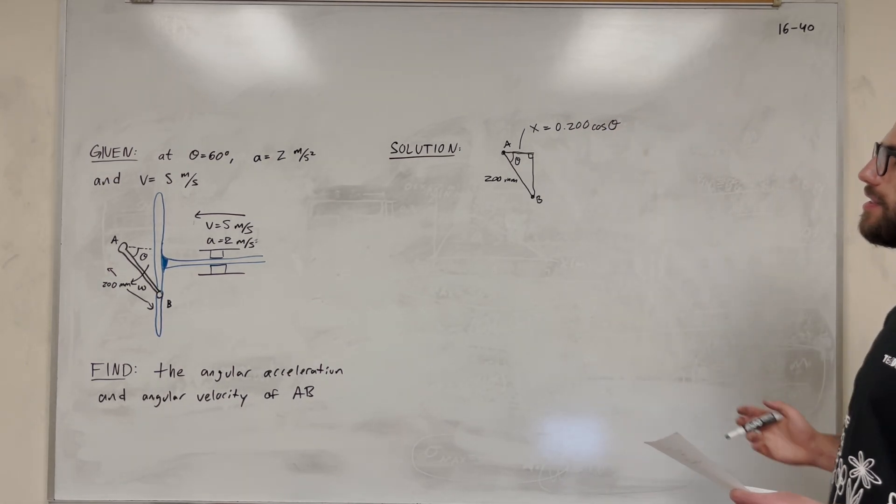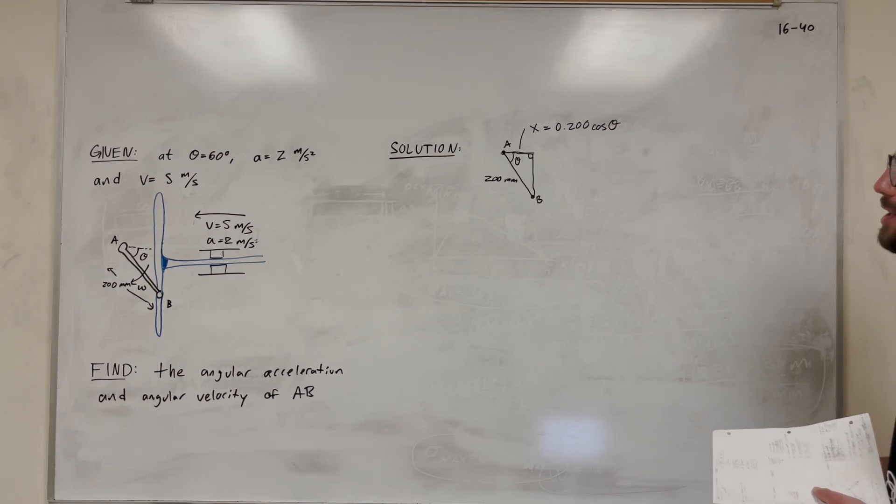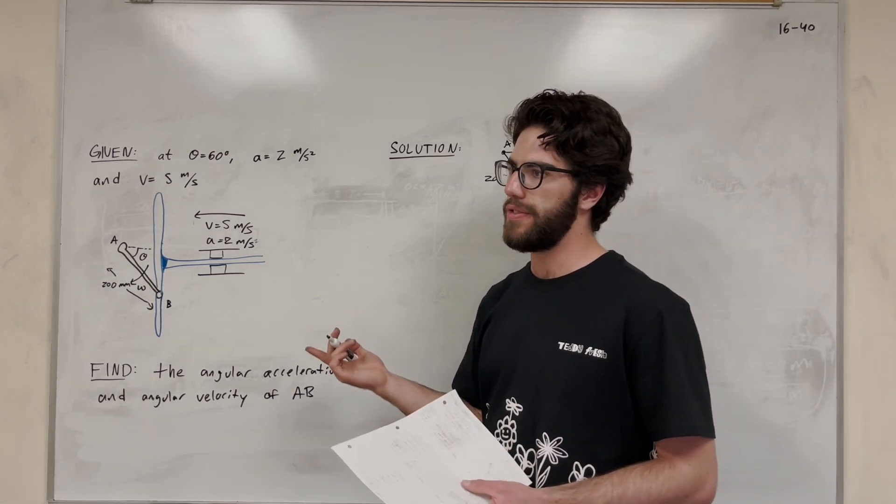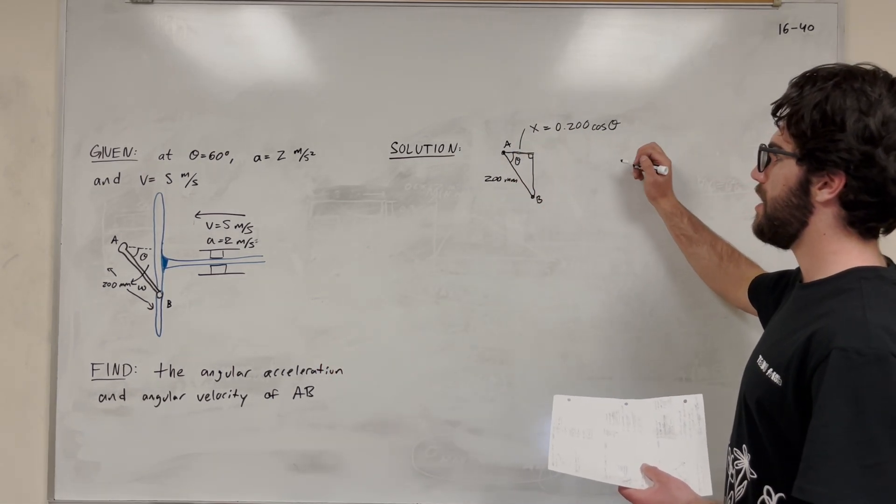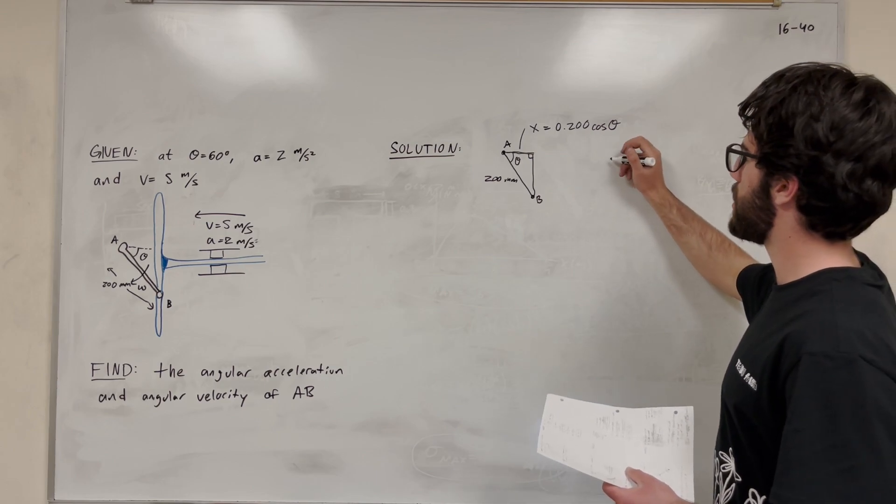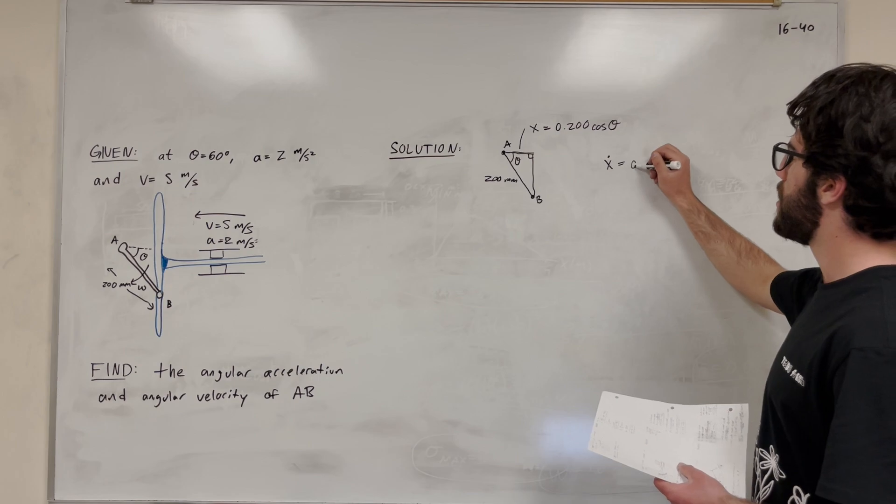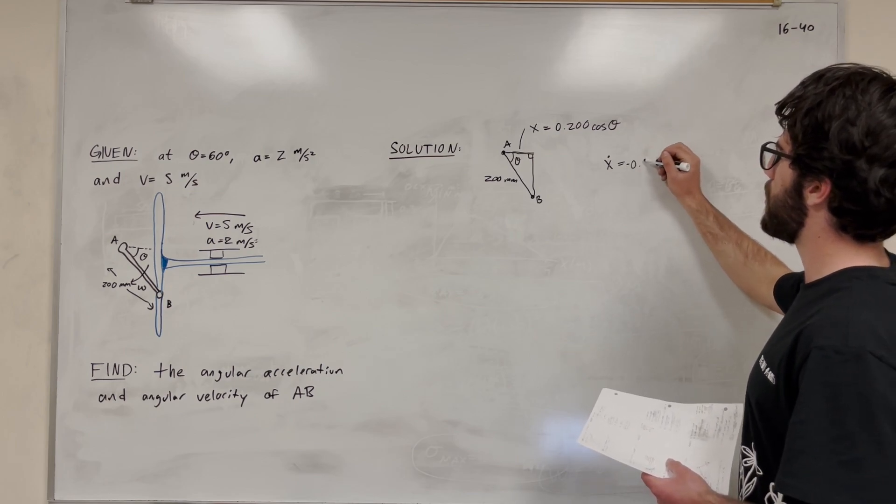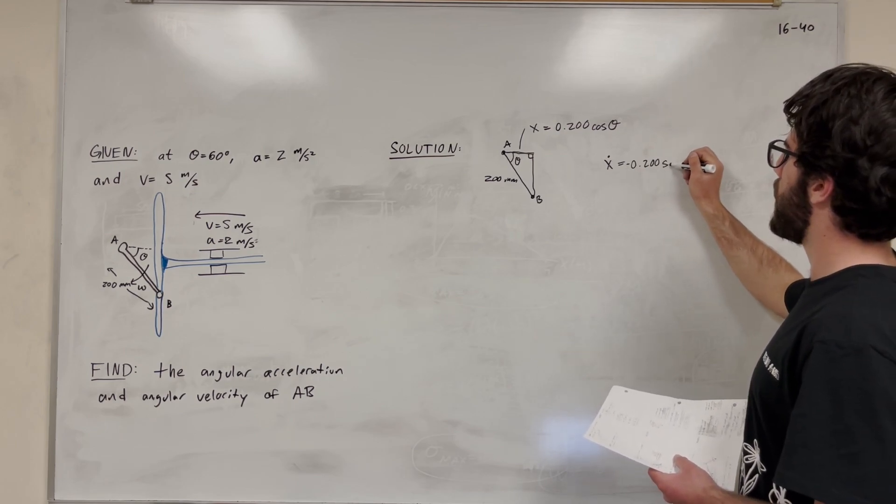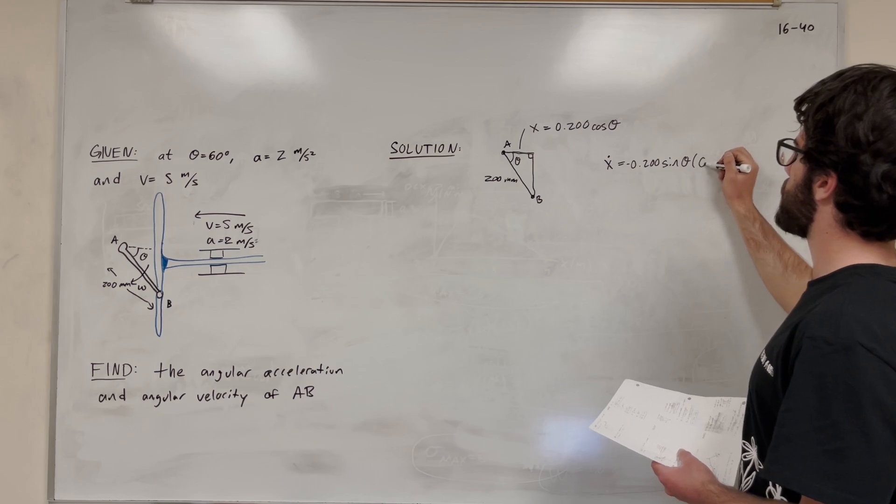All right, so if x is this, we can see through geometry, but we can find velocity by taking the time derivative, because dx/dt is the velocity. So let's take the time derivative, and let's do x dot. So now we're taking the derivative of this. Of course, it's going to be negative 0.200 sine of theta, and I'm going to multiply it by theta dot.